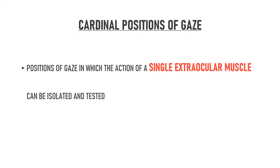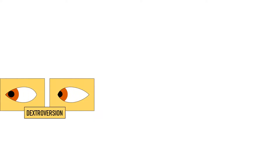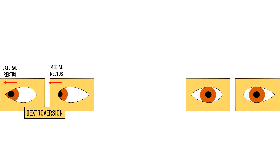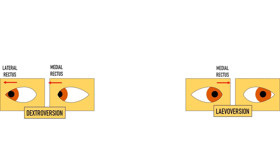When the eyes move to the right — that is in dextroversion — the muscles primarily responsible are the right eye's lateral rectus and the left eye's medial rectus. So in this gaze, we are testing only these two extraocular muscles, one from each eye. Similarly, when the eyes move to the left in levoversion, the muscles acting are the right eye's medial rectus and the left eye's lateral rectus, again one from each eye.